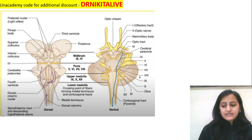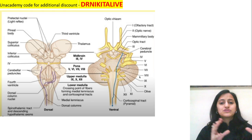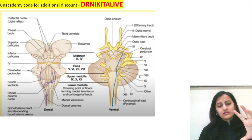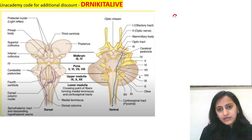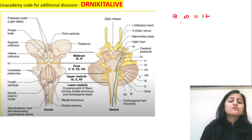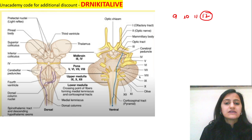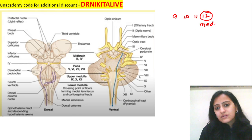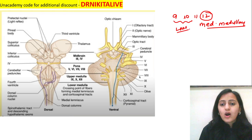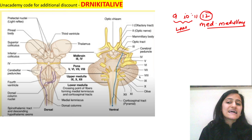In the medullary syndromes, first we need to know the cranial nerves that arise from the medulla, as that helps us localize the lesion. As discussed in part 1, above the pons we have the first 4 cranial nerves, in the pons the middle 4, and in the medulla the last 4. So cranial nerves 9, 10, 11, and 12 arise from the medulla. Out of these, cranial nerve 12 is located medially.